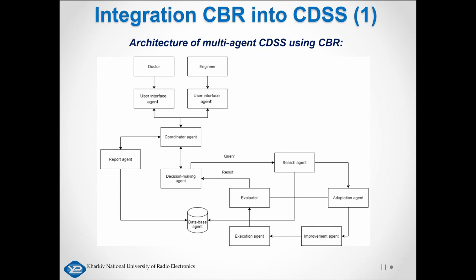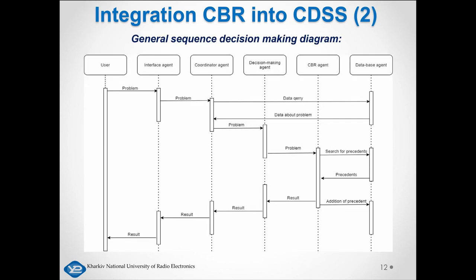In the CBR system, applications first go to the Search Agent, which finds the case most similar to the problem. The result then passes to the Adaptation Agent, which determines the difference between the selected cases and the problem, and if necessary applies a set of rules to make the old solution best suited to the new problem. The Enhancement Agent then criticizes the adaptation solution against the previous result, and after a solution is criticized, the Execution Agent applies the refined solution to the current problem. Finally, the Evaluator stores the result in the precedence database for further use and sends it to the Decision Agent, who returns the result to the user through the Coordination Agent.